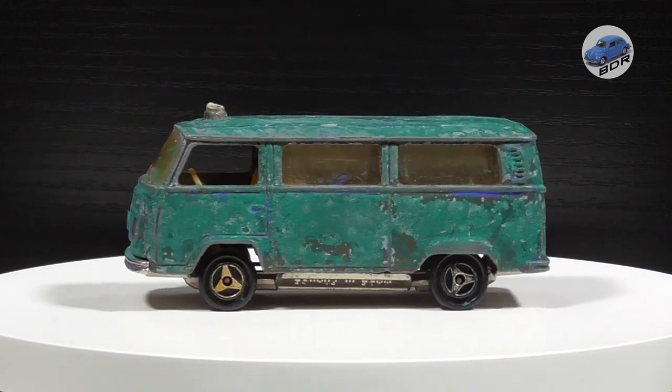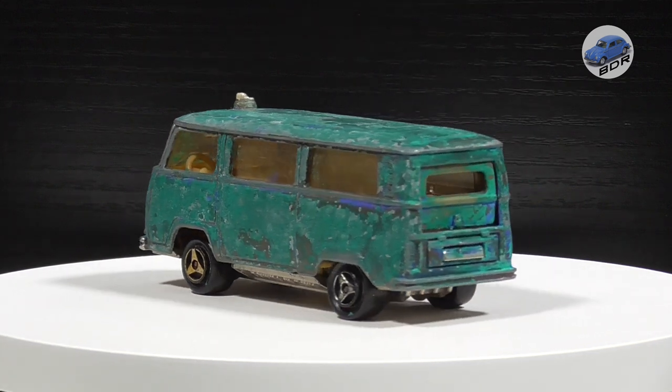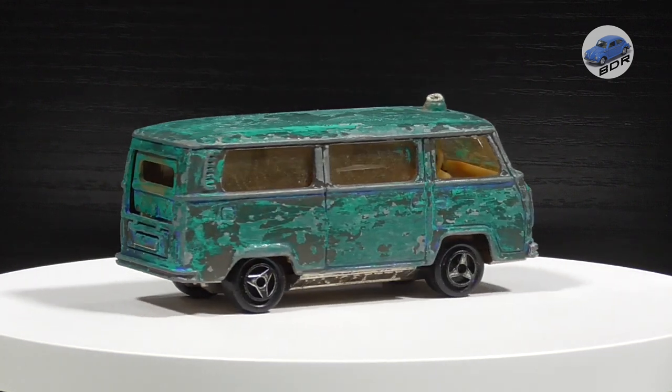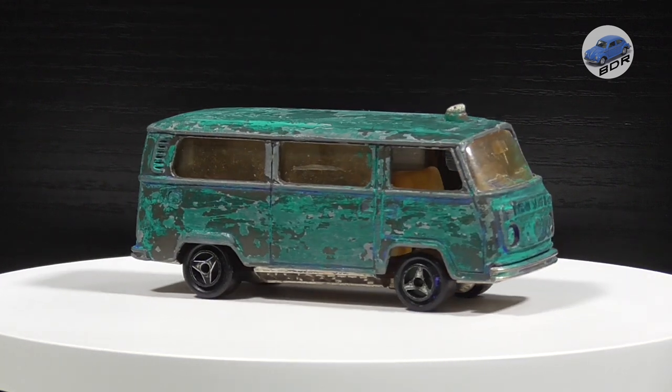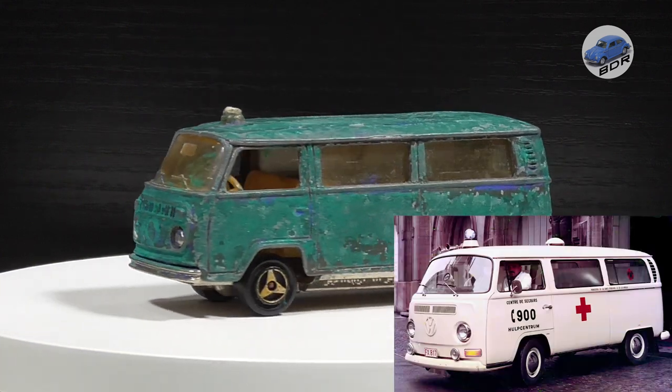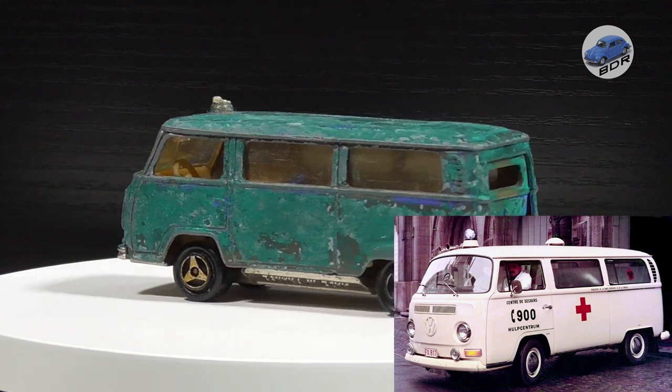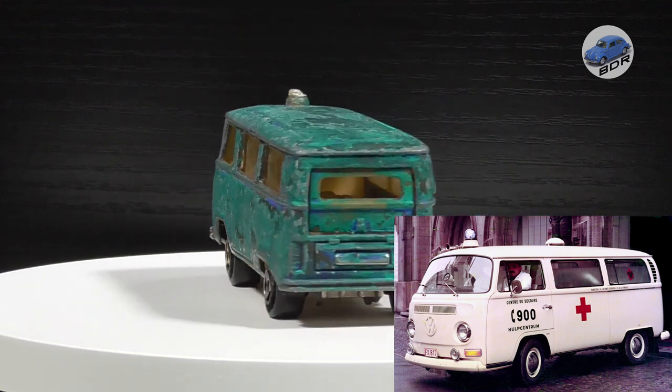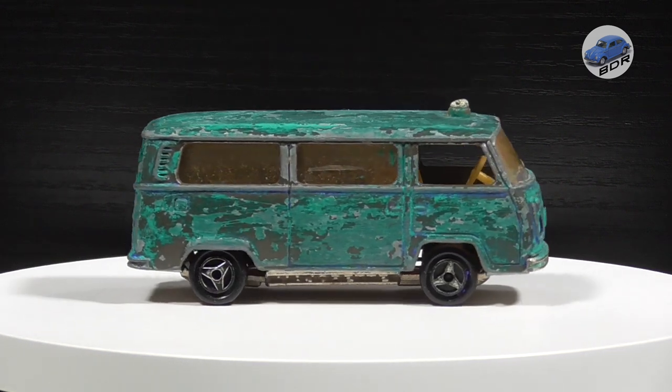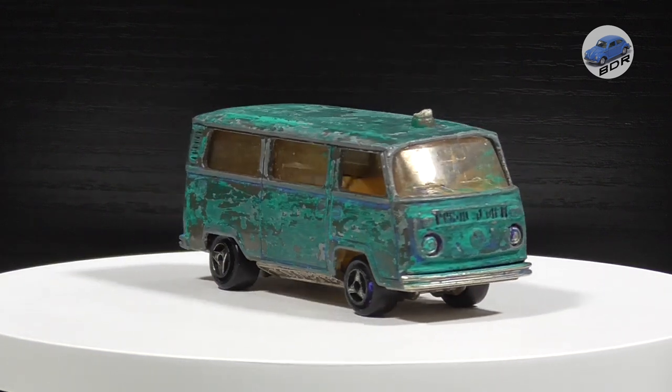In this first video I will tackle the military ambulance. Actually the first model produced in this range by Majorette was a French ambulance. The Volkswagen T2 was widely used as an emergency vehicle all over Europe back in those days. The Belgian Red Cross also drove T2 ambulances from the late 60s up to 1981 and this is the picture that inspired me for this model.